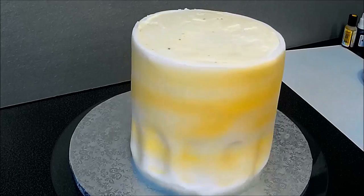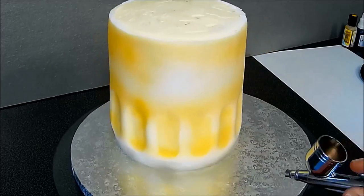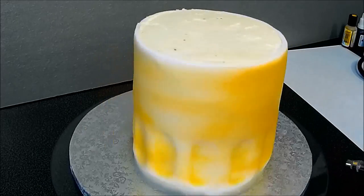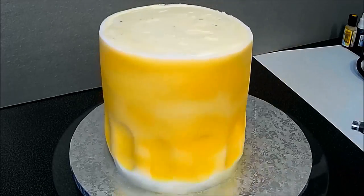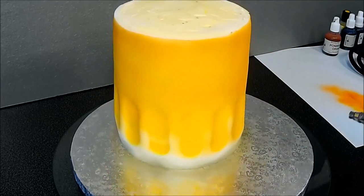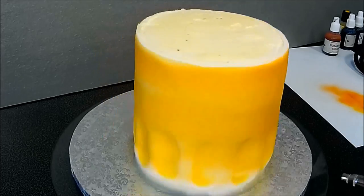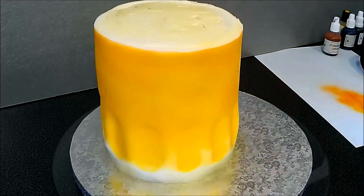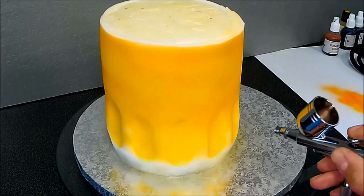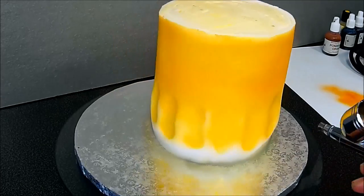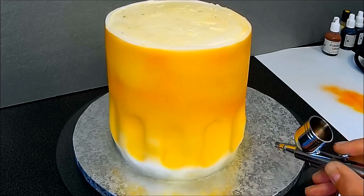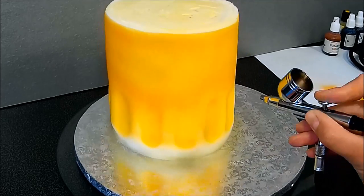And I'm covering the rest of the cake in yellow. It doesn't have to be a perfect job because we'll be applying some other colors to it. Now I'm adding orange color in some random places and spraying it also on the outside of the dents.